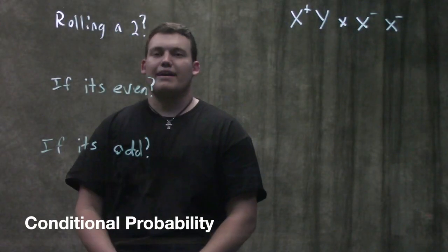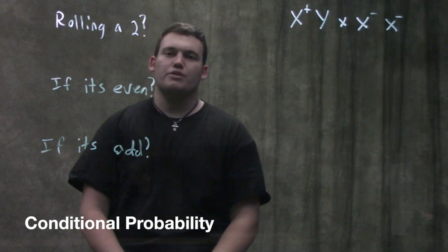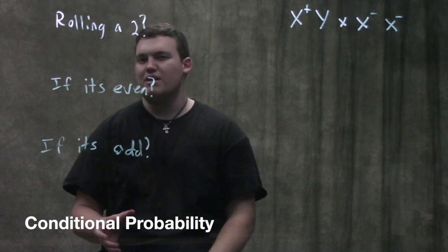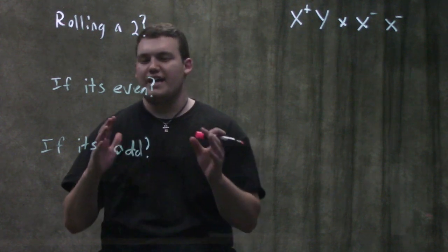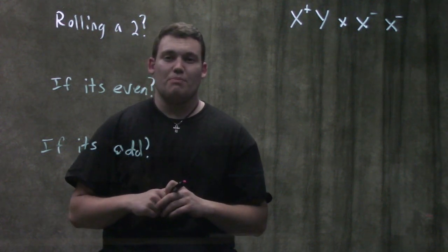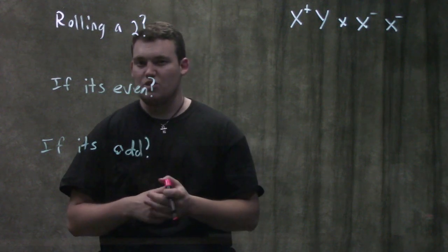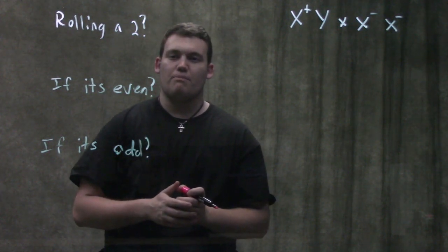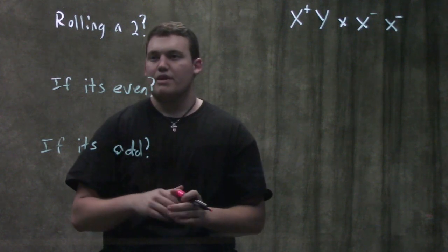In this video we're going to be covering conditional probability. Conditional probability is really important in genetics because it's a tough concept, and the thing that's really going to trip you up — once you understand the concepts — is knowing when to actually use it. Sometimes professors will sneak a little word in there and you think you know how to do the problem, but you actually had to use conditional probability. We'll talk about some situations like that.